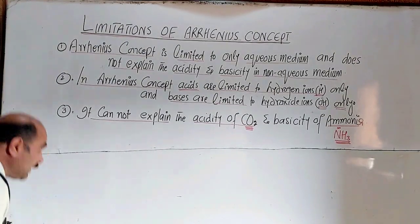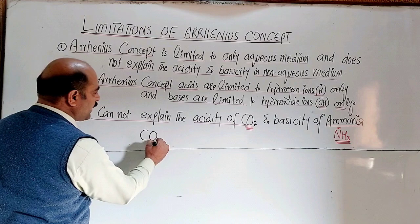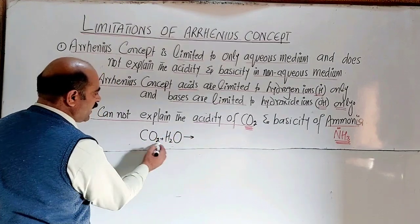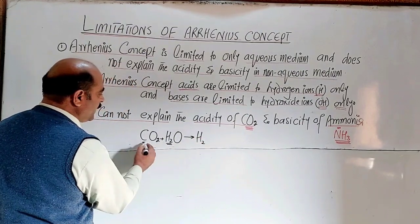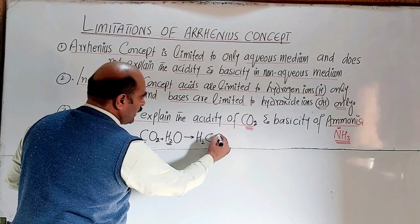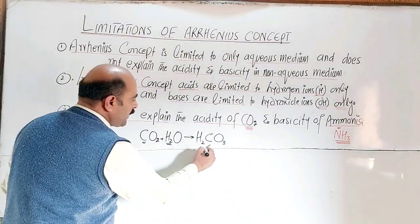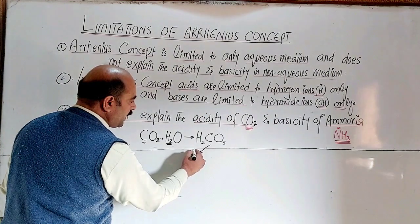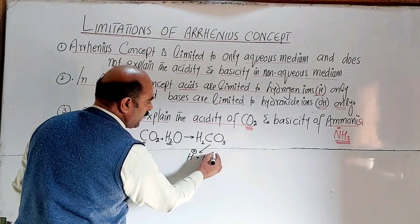Carbon dioxide reacts with water to form carbonic acid, H₂CO₃. The carbonic acid then dissociates to provide hydrogen ions and the hydrogen carbonate ion HCO₃⁻. So carbon dioxide is acidic, but the Arrhenius concept cannot account for this.